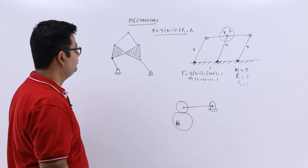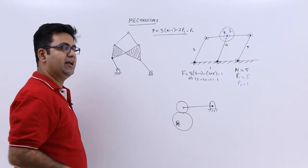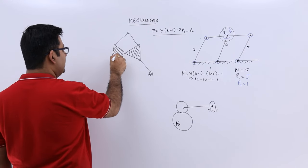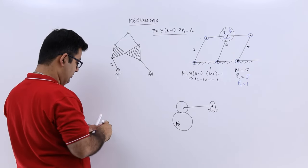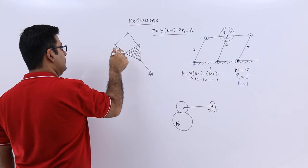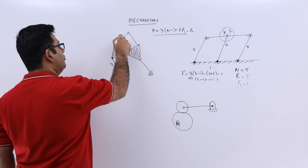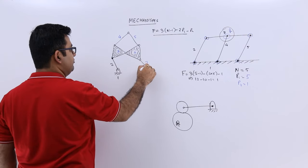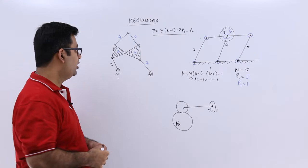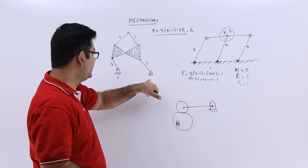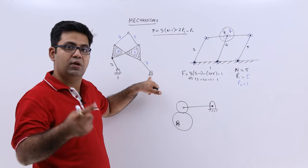Let us come to this one. Let us count the number of links first of all. So this is link 1, link 2, this is a ternary link, so this is link 3, this is link 3, this is link 4, link 5, this would be link 6, and this would be link 7. Don't count this as link 8 because these both are the same links, so this is also link number 1.